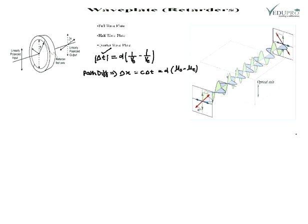If we choose the thickness of the plate such that the path retardation equals λ/4 or λ/2, then the plate is called a quarter wave plate or half wave plate respectively. There are three types of plates: the full wave plate, the half wave plate, and the quarter wave plate.